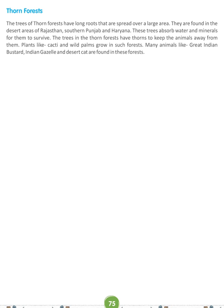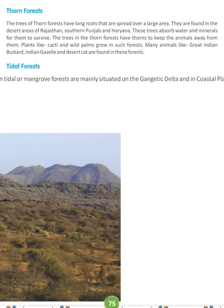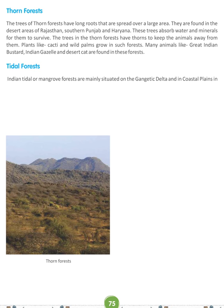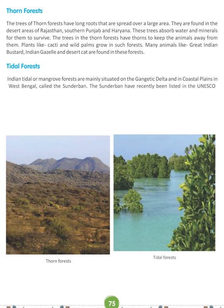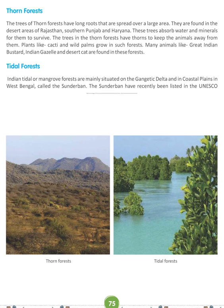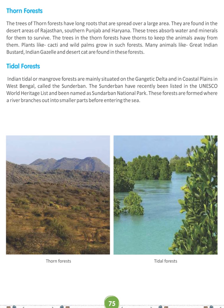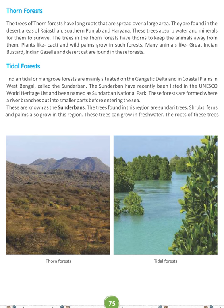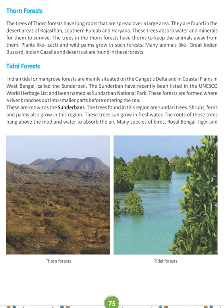Tidal Forests: Indian tidal or mangrove forests are mainly situated on the Gangetic Delta and in coastal areas in West Bengal called Sundarbans. The Sundarbans have recently been listed in the UNESCO World Heritage list and named as Sundarbans National Park. These forests are formed where a river branches out into smaller parts before entering the sea. The trees found in this region are Sundari trees. Shrubs, ferns, and palms also grow here. The roots of these trees hang above the mud and water to absorb air. Many species of birds, Royal Bengal Tigers, and crocodiles are also found in these forests.